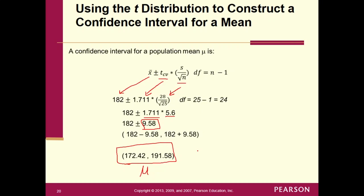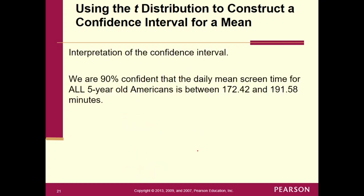The last step is always to do the interpretation, to do the inference here. So interpretation of the confidence interval. Here we're going to start off: We're 90% confident that mu, which is being defined as the daily mean screen time for all five-year-old Americans—a lot of times, remember, that parameter is stated right in the problem. And if you go to the problem, it will be stated. You'll see it—is between the two values that we found. Here's the lower bound, here's the upper bound of the confidence interval. And it was all in terms of minutes.